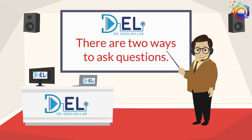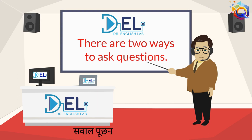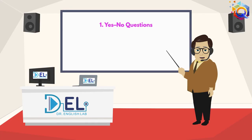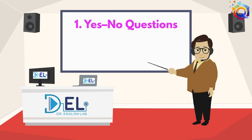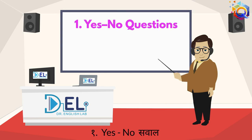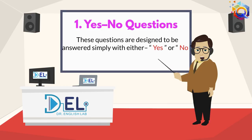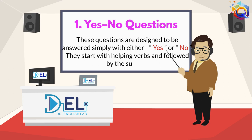It is one of the four basic types of sentences and it's highly useful in spoken English. There are two ways to ask questions. The first type is Yes/No questions. These questions are designed to be answered simply with either yes or no. They start with helping verbs followed by the subject.